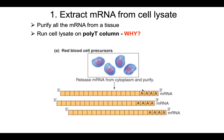Why a poly-T column? Because all messenger RNA is modified by having a 3' poly-A tail that will conveniently bind to a poly-T column. So you run that RNA through the column, the mRNAs bind to the poly-T, everything else goes through, and then you wash out your messenger RNA.